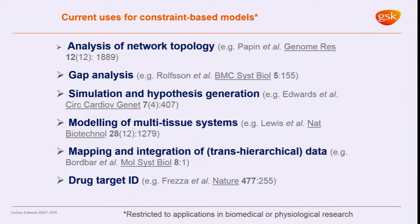These approaches have been used for lots of different things. Network topology — looking at how things are linked and what bits of the network might be essential to its normal functioning. Gap analysis is a very nice way of looking at which bits of your network should be there but aren't — and there was a nice paper in Nature Biotechnology where that approach uncovered open reading frames in the human genome that hadn't been annotated. Also: simulation and hypothesis generation, modelling of multi-tissue systems, mapping and integration of trans-hierarchical data — taking multi-omics data and incorporating it into a single model — and drug target identification.